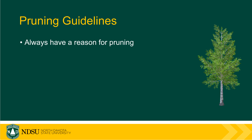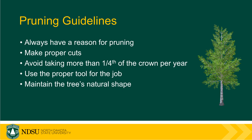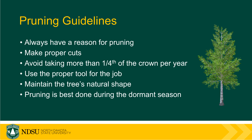In summary, when you're pruning you always want to have a reason for pruning. Make proper cuts just outside the branch collar — not too close and not too far out — allowing the tree to naturally heal over. Avoid taking more than a fourth, sometimes a third, of the crown per year, because those leaves are how the tree makes its food and the more crown you remove the harder it is for the tree to recover. Use the right tool for the right job — pruning shears up to an inch, pruning saw for anything bigger. Maintain the tree's natural shape; for example, spruce trees naturally have branches all the way to the ground, so try to work with the tree's natural biology.